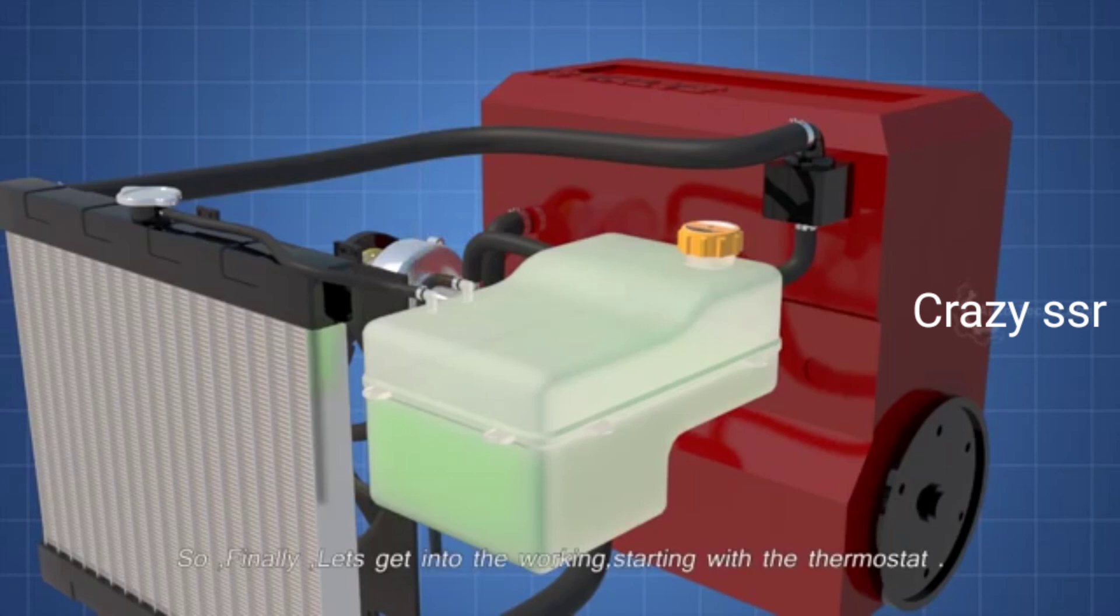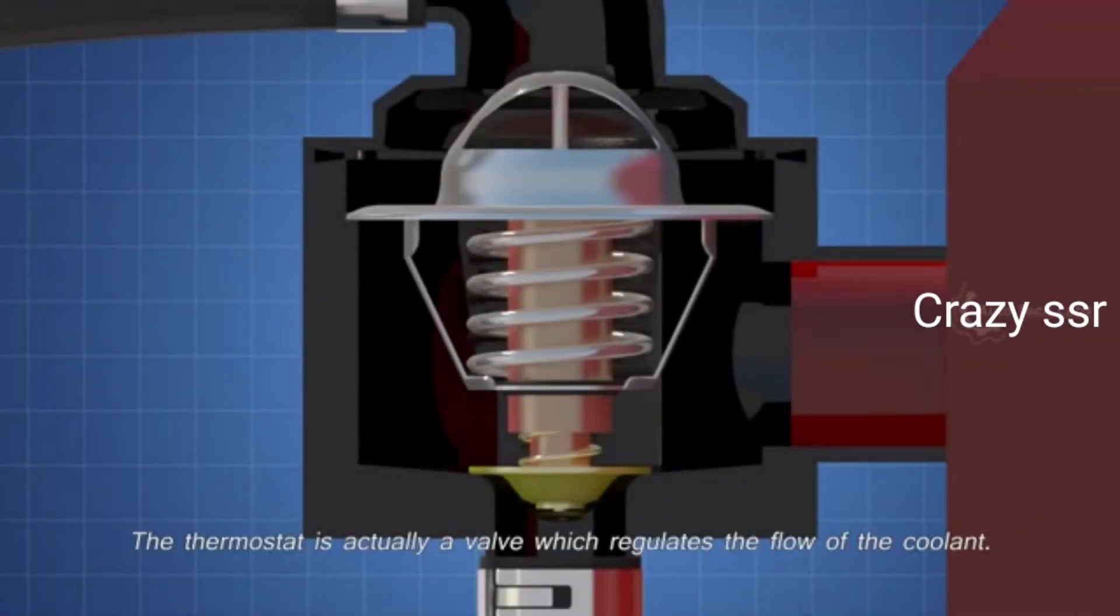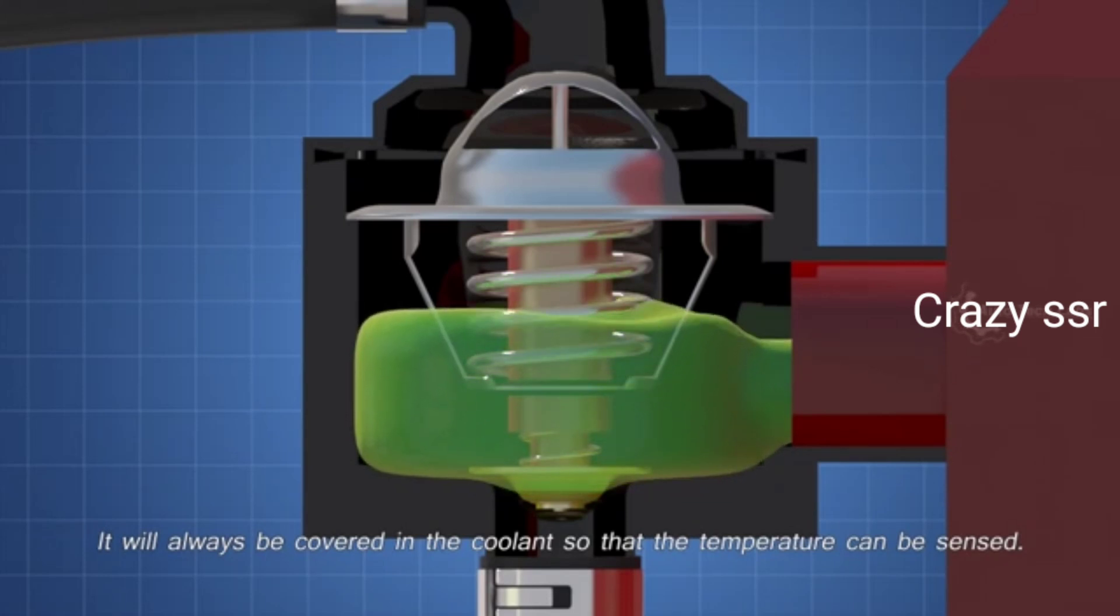So finally, let's get into the working, starting with the thermostat. The thermostat is actually a valve which regulates the flow of the coolant. It will always be covered in the coolant so that the temperature can be sensed.